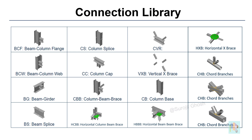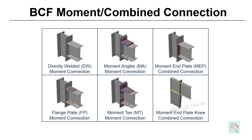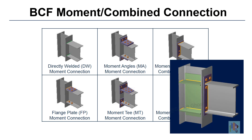Under beam-to-column flange connection, we have different shear connection types like shear tab, end plate, clip angle, and stiffened and unstiffened seated connections. Under moment and combined connections, several other templates are available like flange plate, directly welded, moment angle and end plate connections, and knee connection for tapered members. If required, we can assign additional stiffeners and doubler plates in the column, which are fully customizable and considered during connection design.